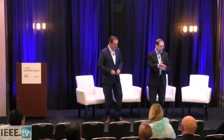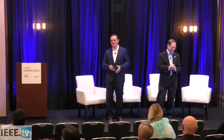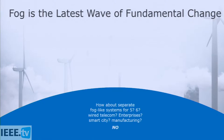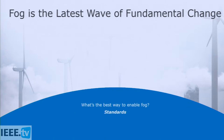So how about separate fog-like systems for 5G, wireline telecom, enterprises, smart city, manufacturing? The answer is clearly no. Based on what we know about Wi-Fi and TCP/IP, you can't have a variety of flavors of these technologies. The best way to enable all of this is standards. The goal of this consortium is to provide a horizontal framework for distributing computing functions, managing and securing distributed resources and services throughout the cloud-to-edge continuum.